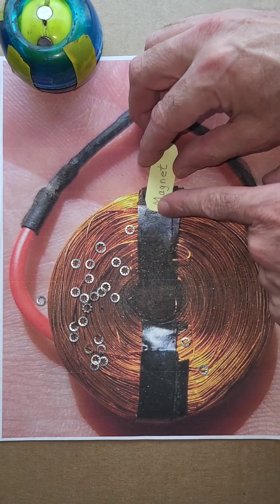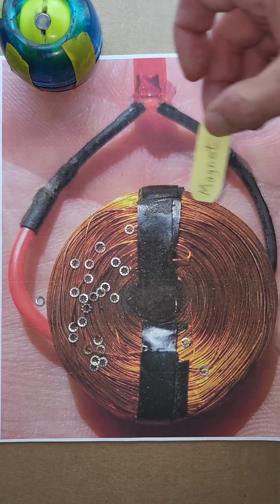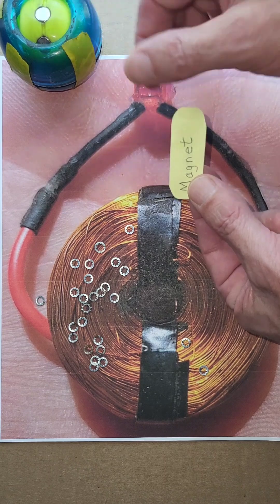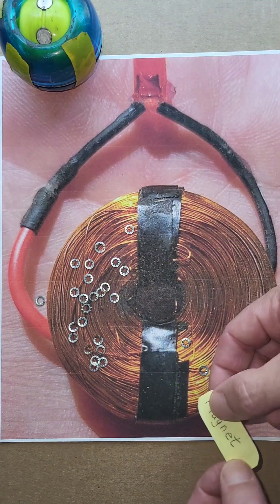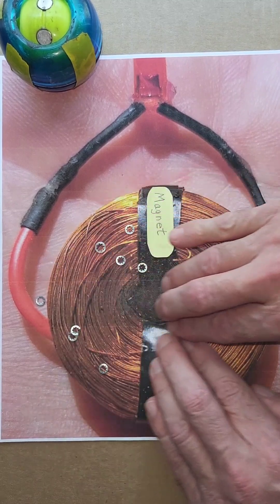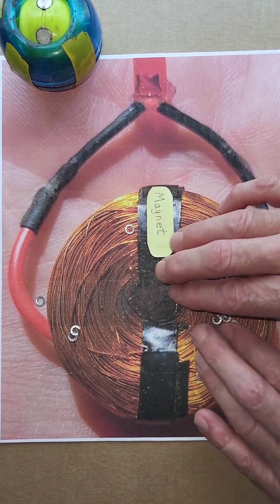Then when the next magnet swings by—as you can see, there are multiple magnets—the polarity is flipped and the magnet once again sweeps all the electrons to one side of the coil.